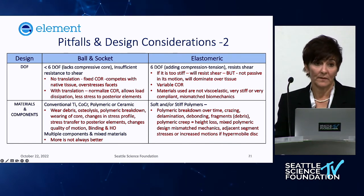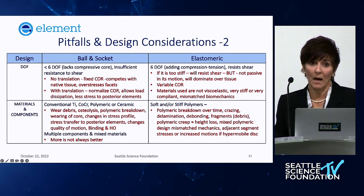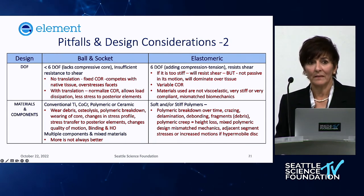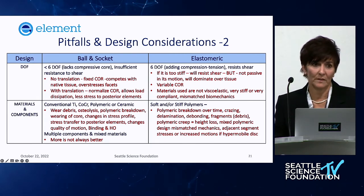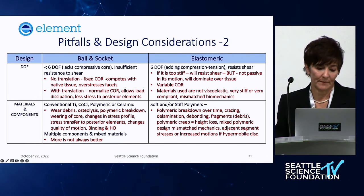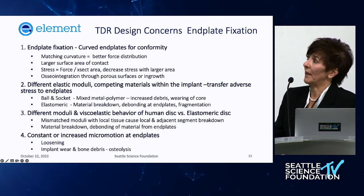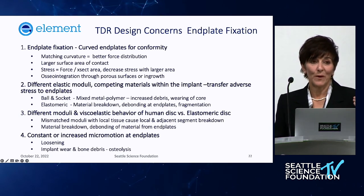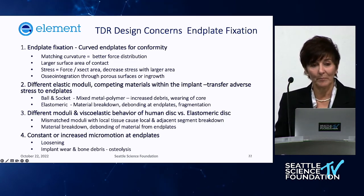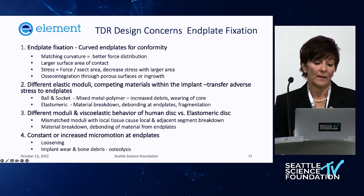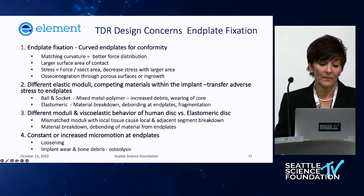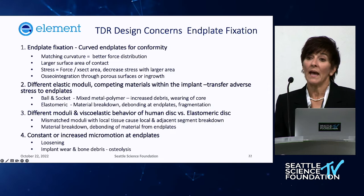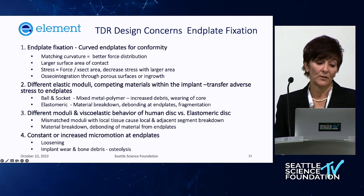A ball-and-socket with no translation and a fixed COR forces the spine to move about the implant's COR. We don't want the implant to overtake the segment — we want it to assist tissue so tissue can heal and adapt appropriately. For end plate fixation: stress goes somewhere. More stress transfers through the implant to surrounding bone. We try to develop larger surface contact areas, contour end plates, decrease stress that end plates receive, and ensure it isn't transferred to adjacent levels.